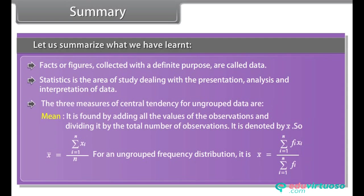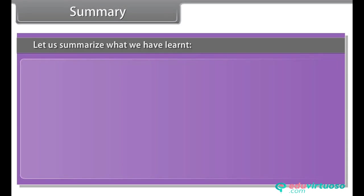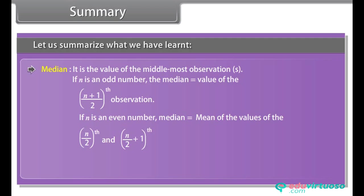The three measures of central tendency for ungrouped data are: Mean — found by adding all the values of the observations and dividing by the total number of observations, denoted by x̄. Median — it is the value of the middle-most observation.